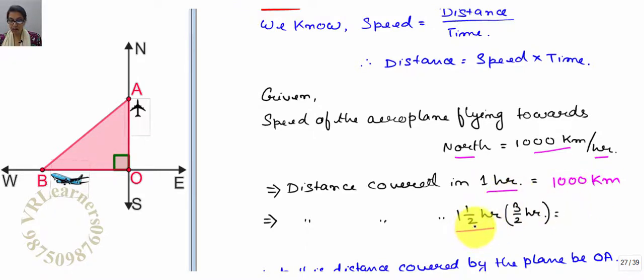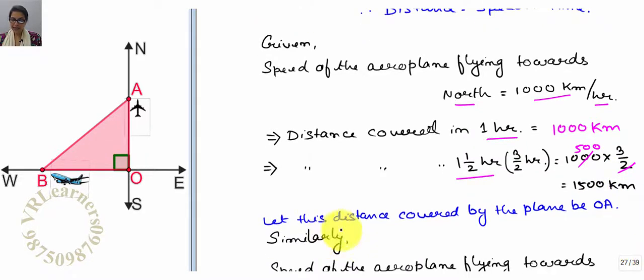Since one and half is mixed fraction, so improper fraction 3 by 2. So here I can cancel, this is 500, so this is 1500 km. So now let the distance covered by this plane which is north be OA, so 1500 km distance is OA.